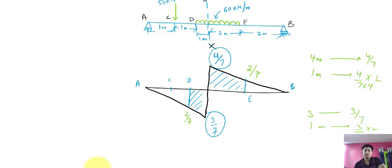Now you have the value of this point and the value of this point. You can calculate the next point also — for 3 meters it is going 3 upon 7 downwards, so for 1 meter it will be 1 upon 7 downwards.